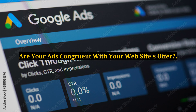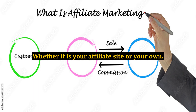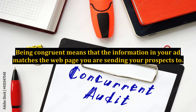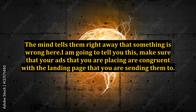Are your ads congruent with your website's offer? Do you have a website set up, whether it is your affiliate site or your own? Are you placing ads online, or maybe even using some offline techniques to get visitors to your site? Make sure everything is congruent with each other. Being congruent means that the information in your ad matches the web page you are sending your prospects to. People go to your website to either get more information or to help them solve their problems. For example, if your ad tells them to download a free ebook and then they land on your content page, they will click away faster than a blink of an eye, and you have now lost a sale. The mind tells them right away that something is wrong.